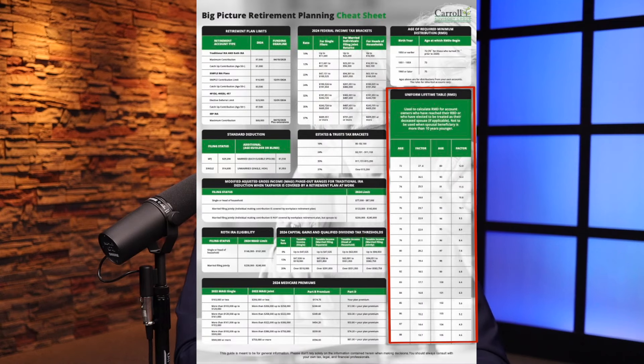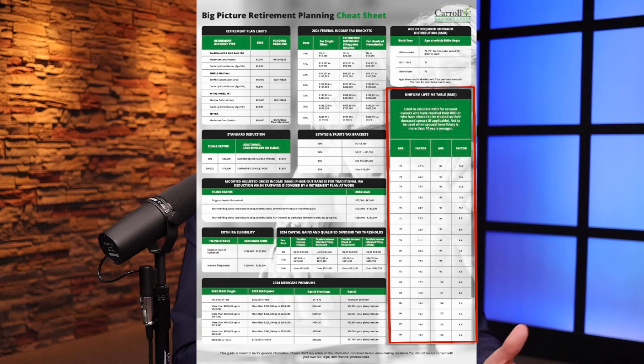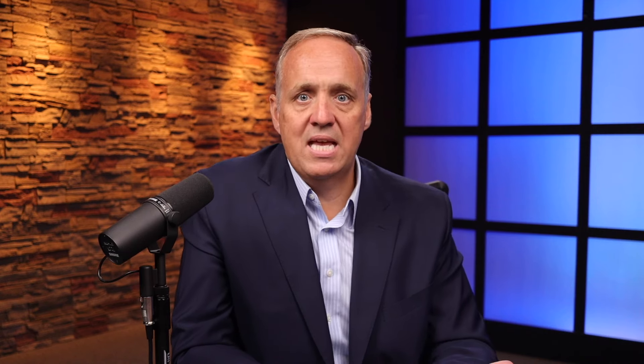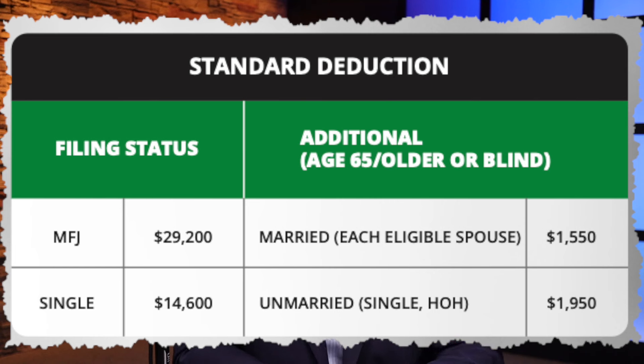I also added a chart that shows the divisor for calculating your RMD. This is the IRS's uniform lifetime table, the one most commonly used, and it will give you a good projection of what your future RMDs will look like. For example, if you expect your IRA to be worth $1 million at age 75, simply divide $1 million by the factor shown — this will tell you that your age-75 RMD will be $40,650. Another section I've added is the standard deduction along with the additional deduction for those over the age of 65, the one that keeps changing every year, and keeping up with this can make a big difference in the taxes you pay.